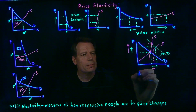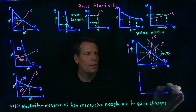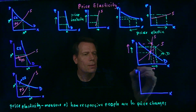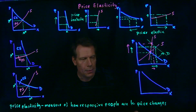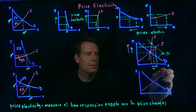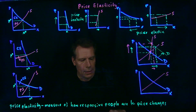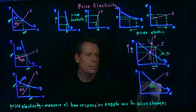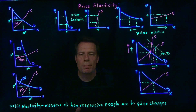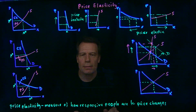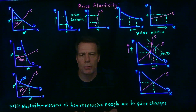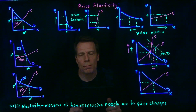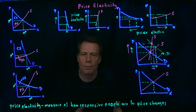Or consider another case: we start with an original demand curve and supply curve and an original equilibrium. Now suppose something causes the supply curve to shift. Supply curves for firms are made up of marginal costs. So suppose there's a new technology that lowers the cost of producing, and so the marginal costs for all the firms fall.